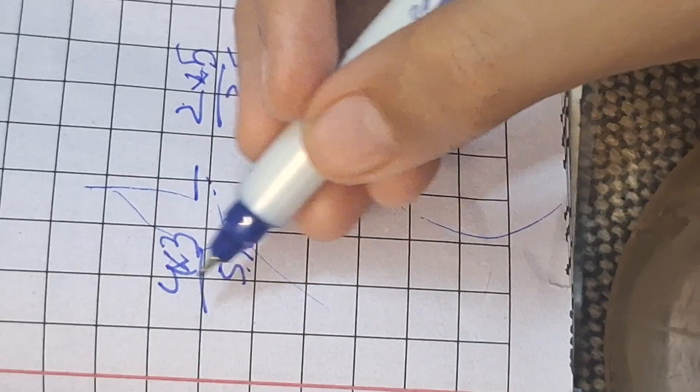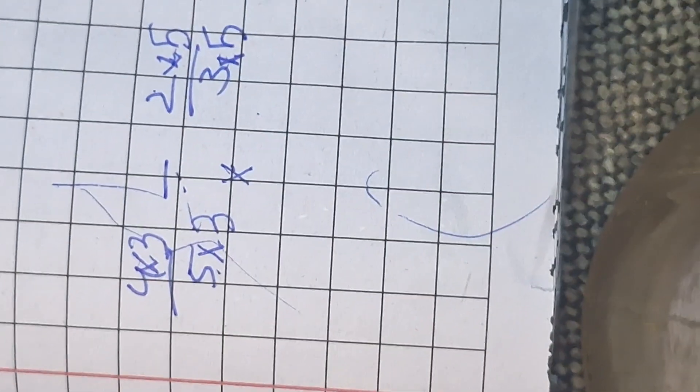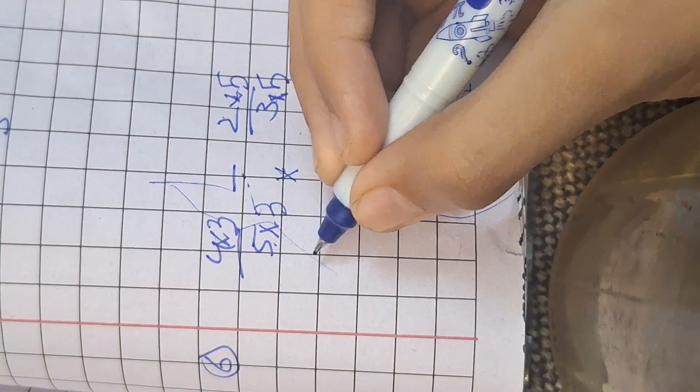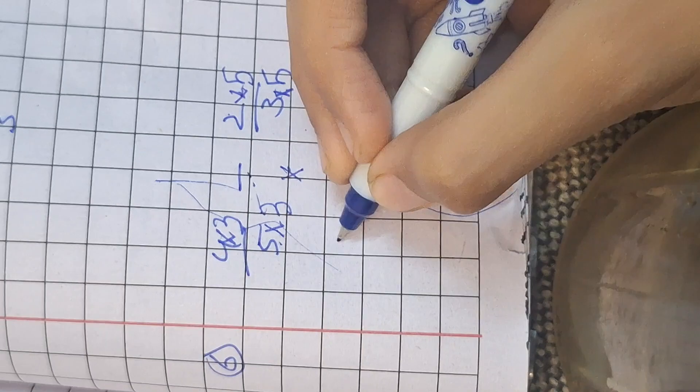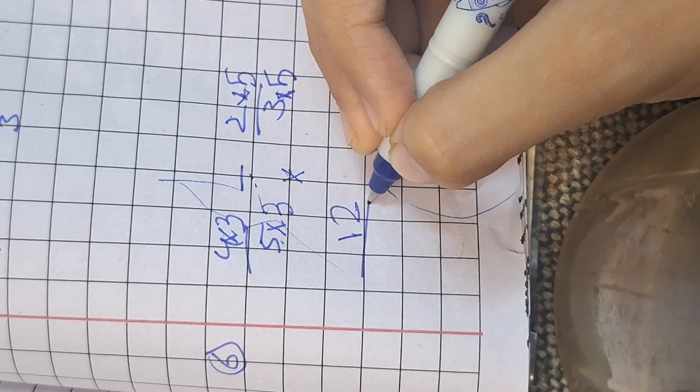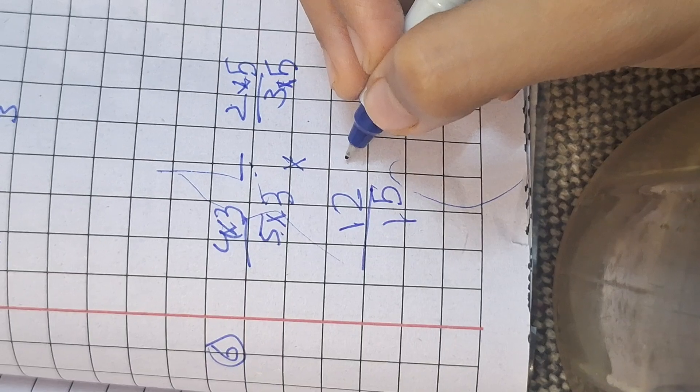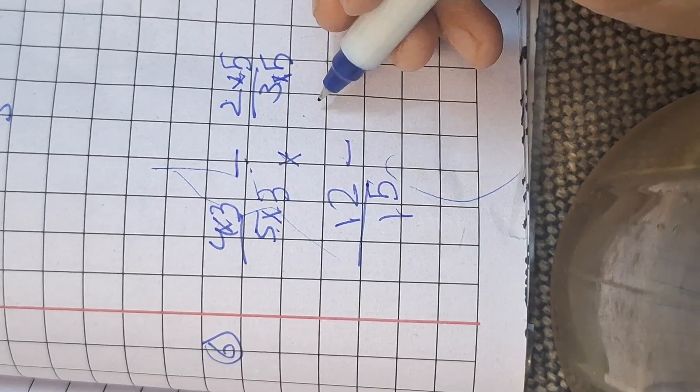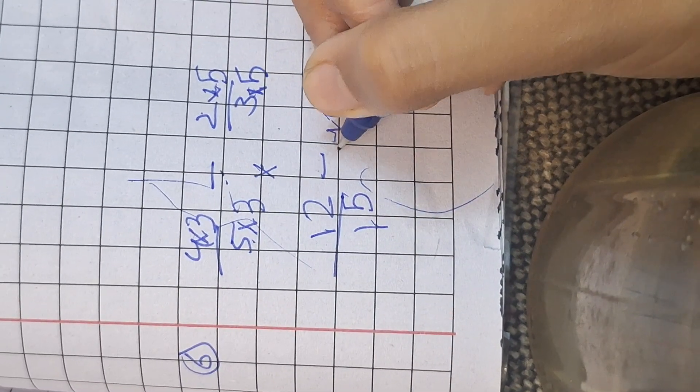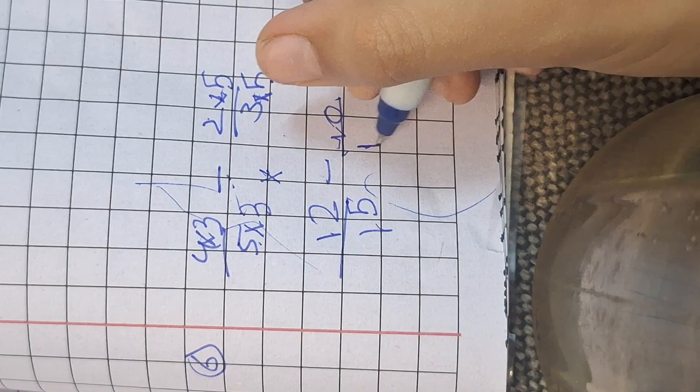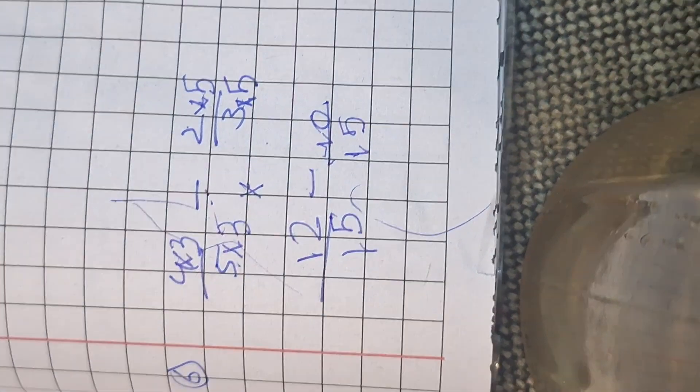So we're just going to quickly find the answer. For these, 4 times 3 is 12, 5 times 3 is 15, 2 times 5 is 10, 3 times 5 is 15. So we got